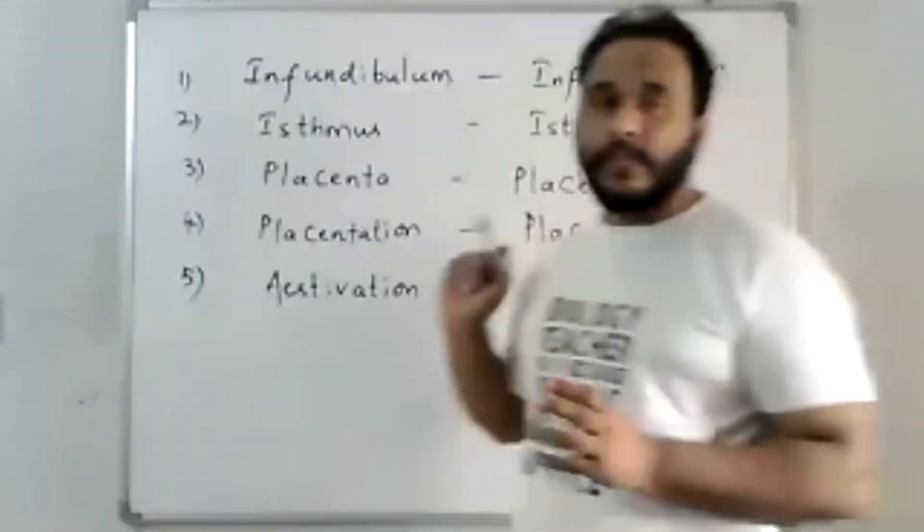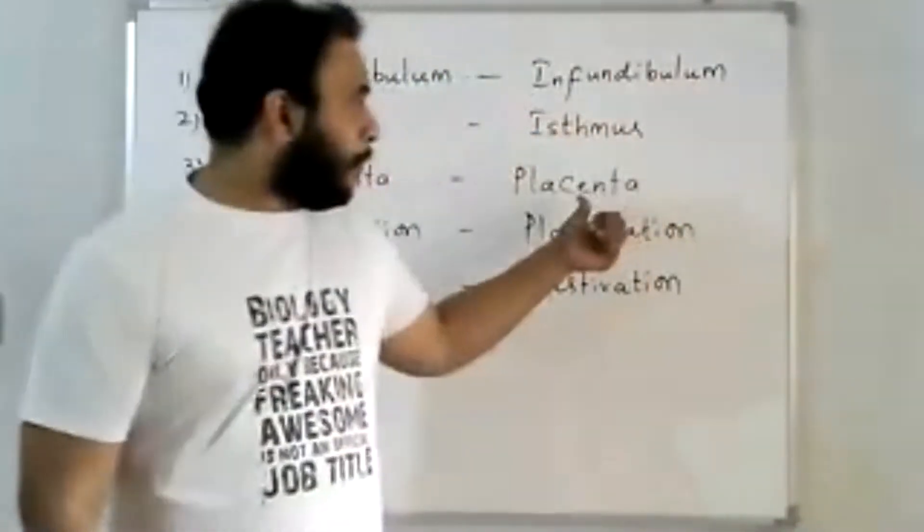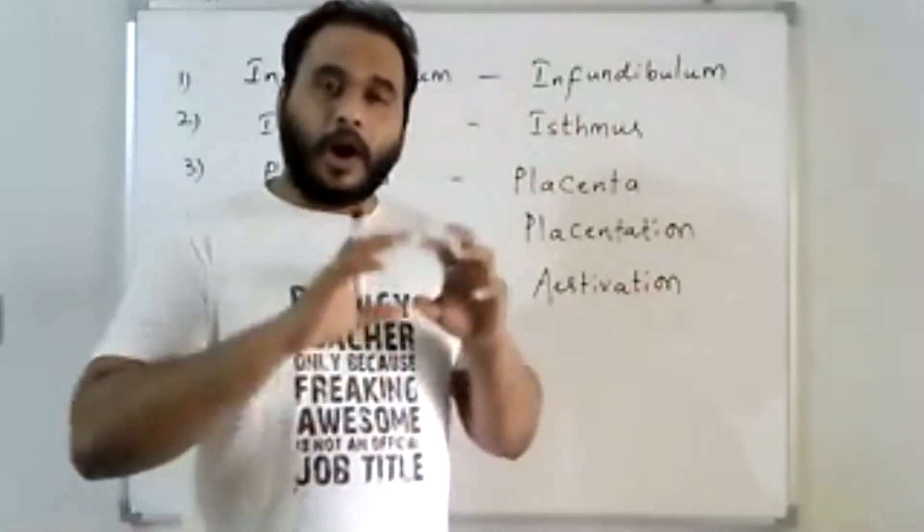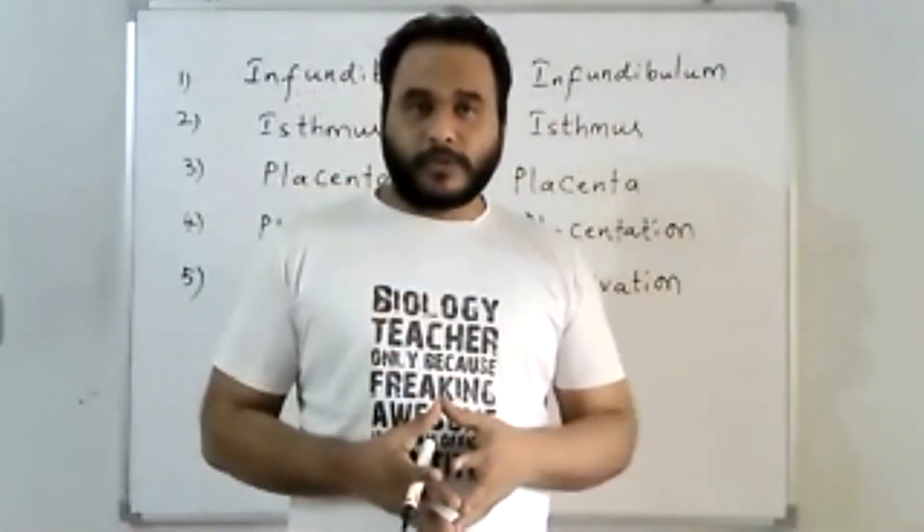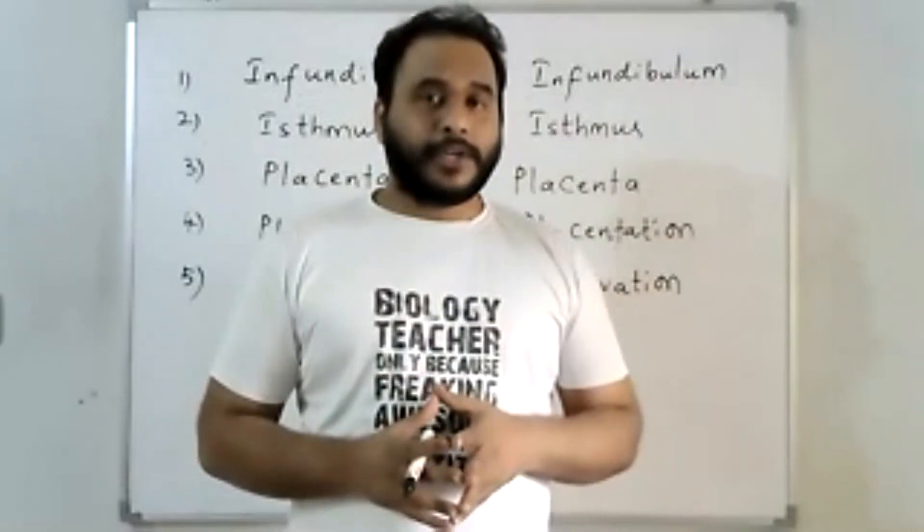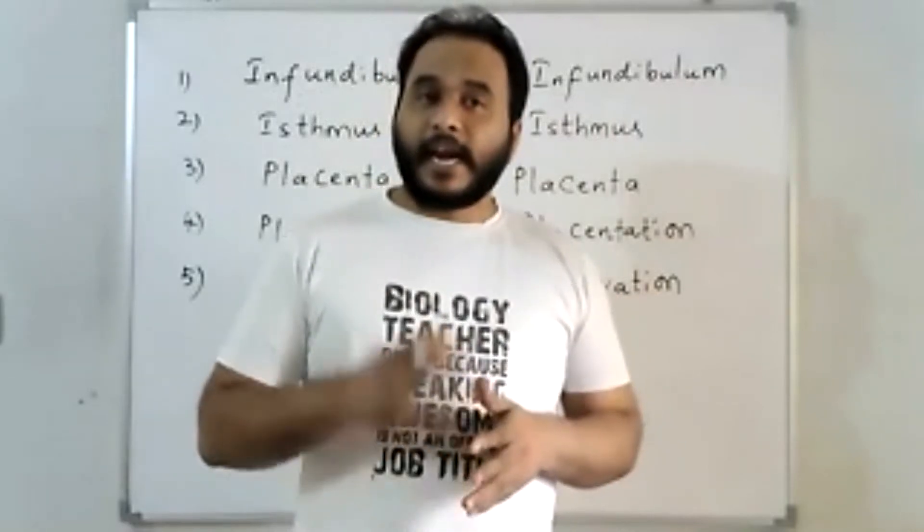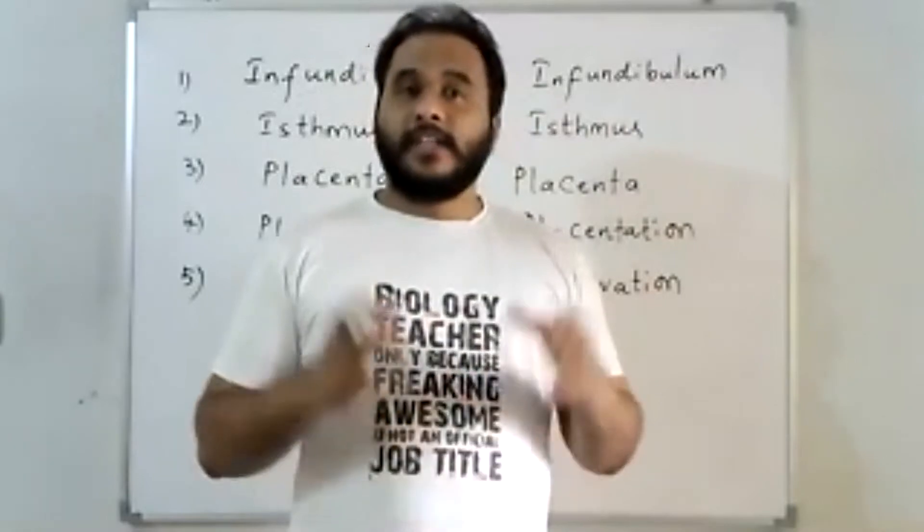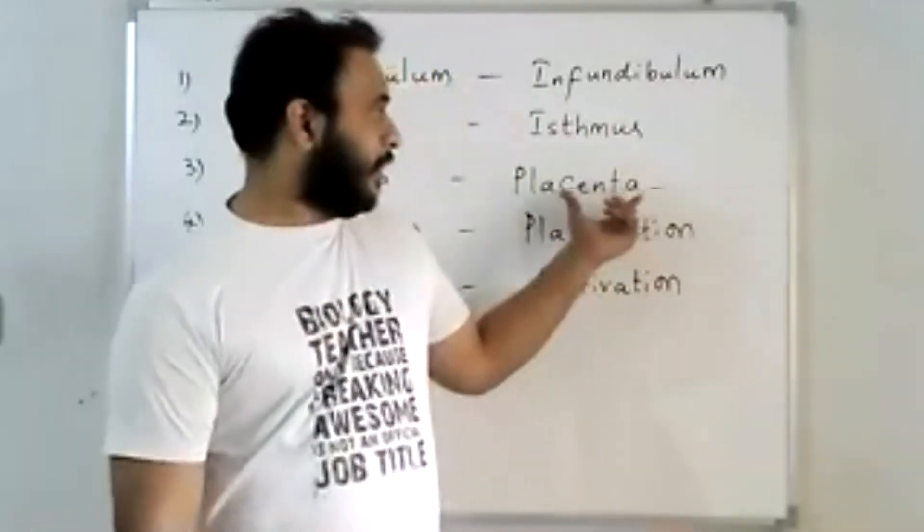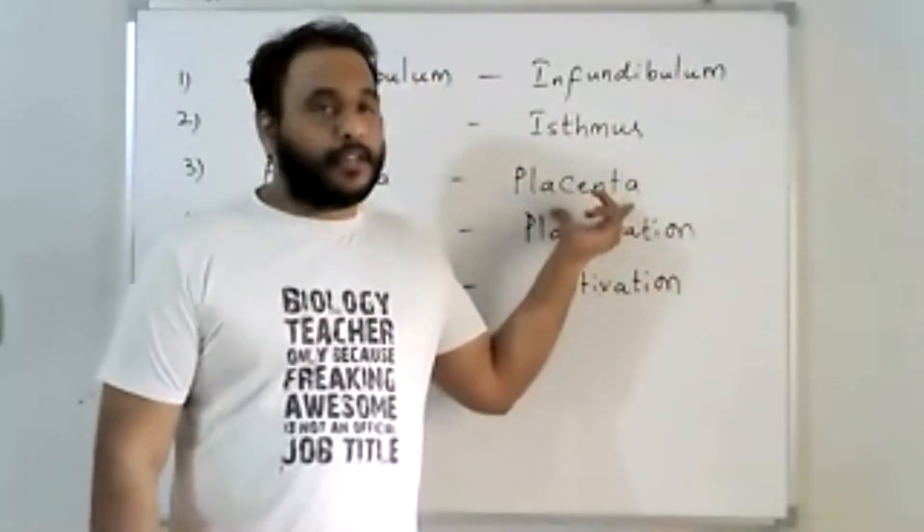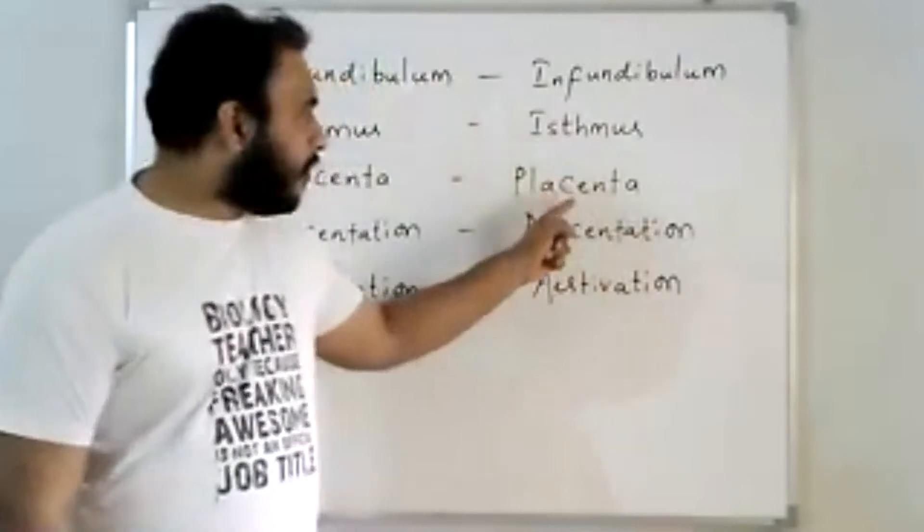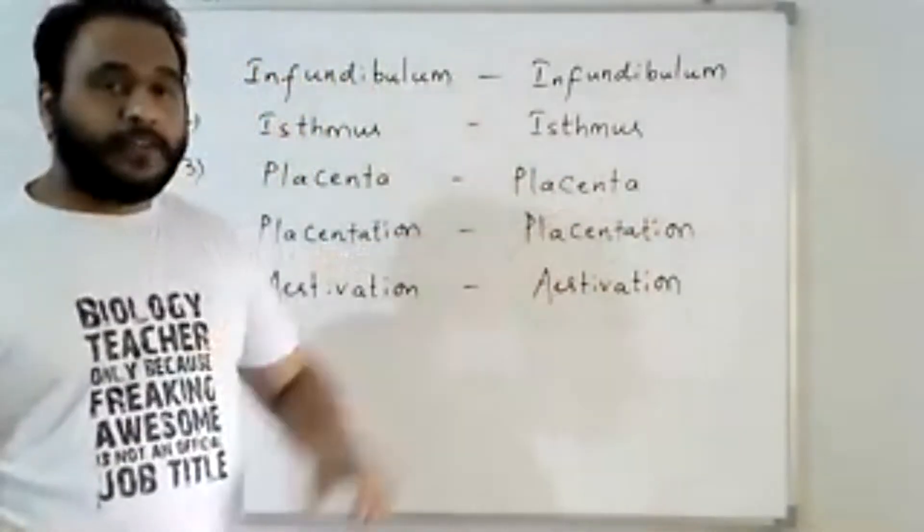And coming to placenta in the human reproduction chapter, you have seen this placenta term. After the implantation process, the trophoblast gives rise to some finger-like projections called chorionic villi, and they interdigitate with the uterine tissue to form a structural and functional unit between the baby and mother, between fetus and mother. That is called placenta. So this placenta and that placenta both are different.